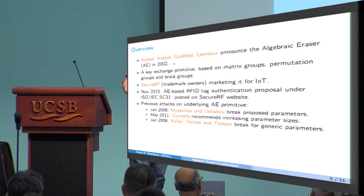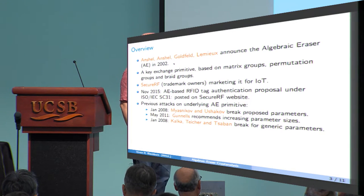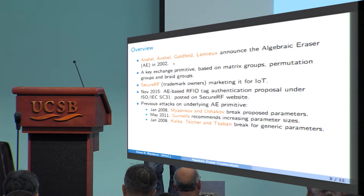But more or less at the same time, again, January 2008, there was a more serious attack, due to Kalka, Taika and Tzaban, which really break the scheme convincingly for generic parameters. So what do I mean by generic parameters? One of the things that's strange about the algebraic eraser is that the choice of certain parts of the public parameters of the scheme, the algorithm for generating these public parameters isn't specified by the scheme. It just says, we can choose these things. It's not said how. So, as a cryptanalyst, you're kind of in a weird, difficult situation, because it's security by under-specification.